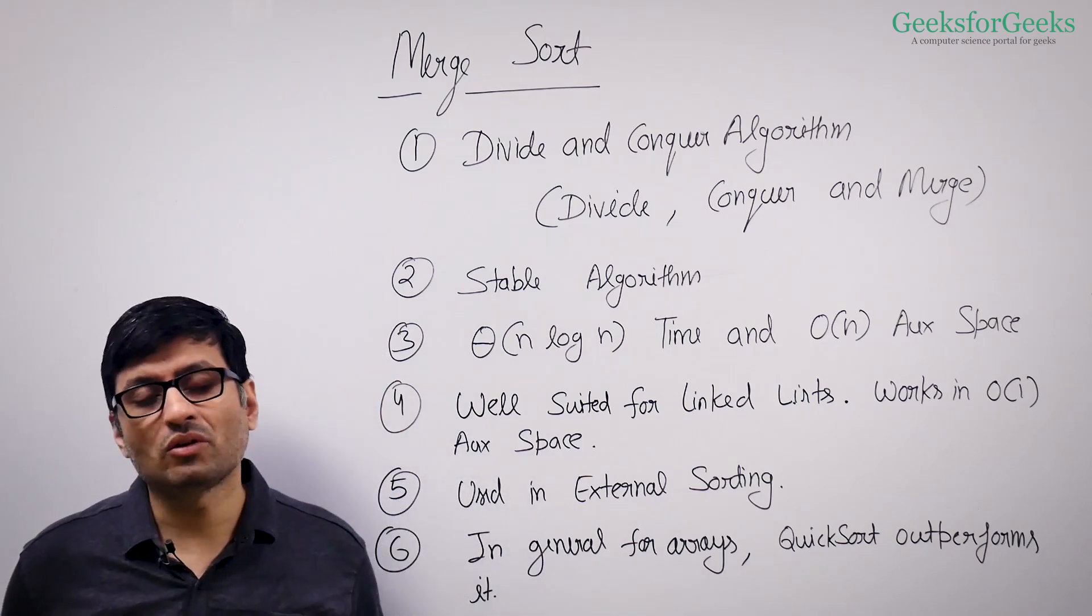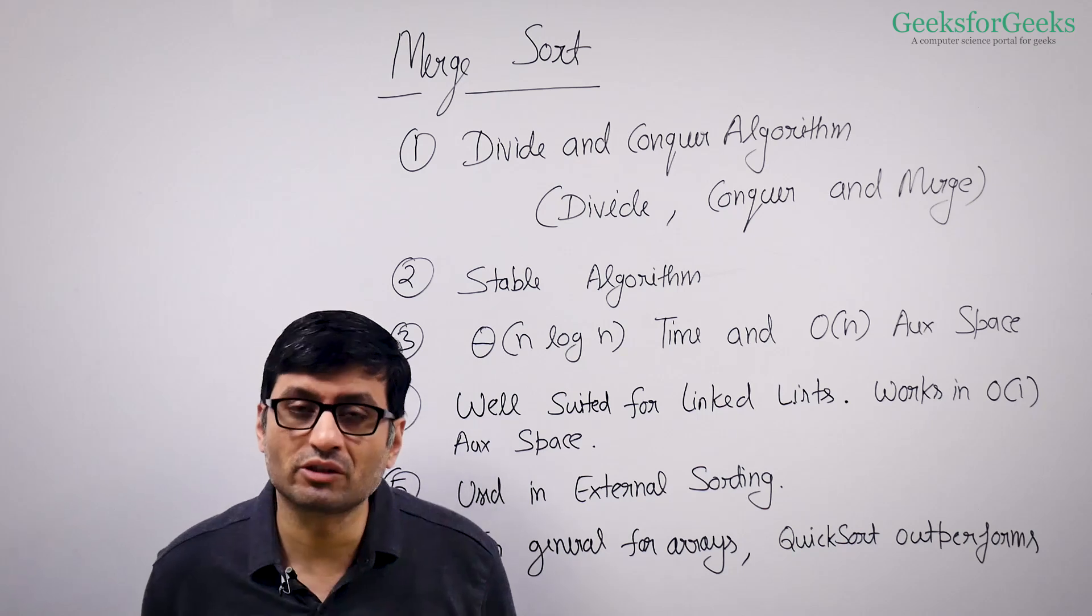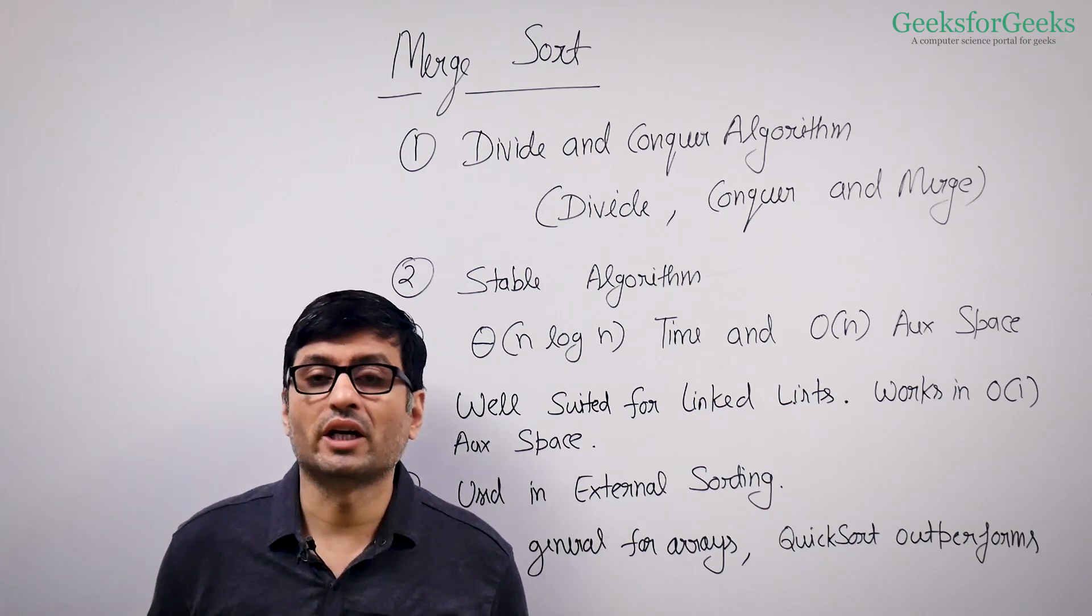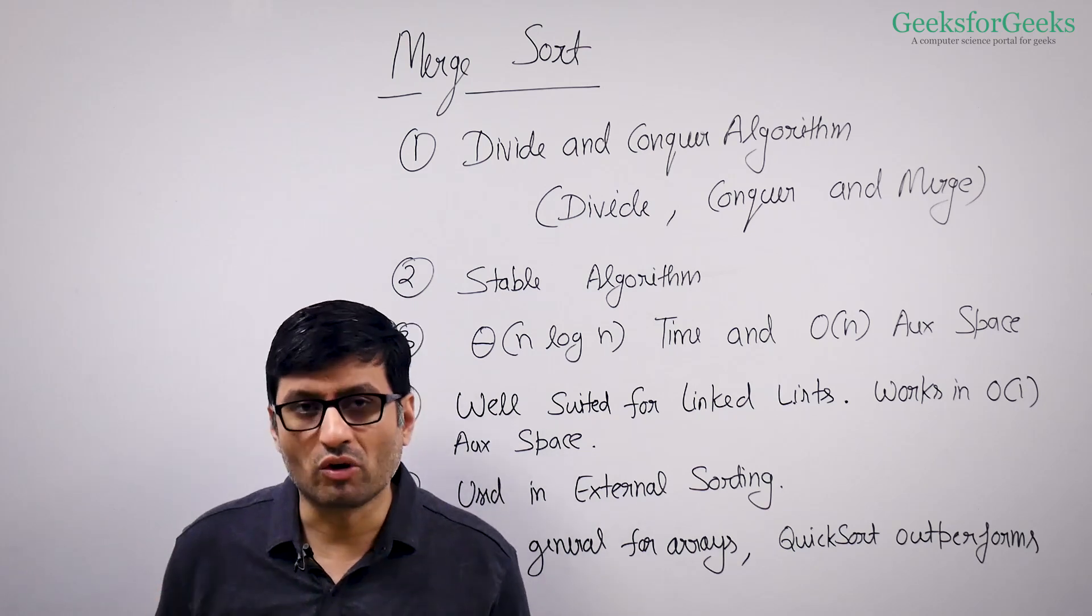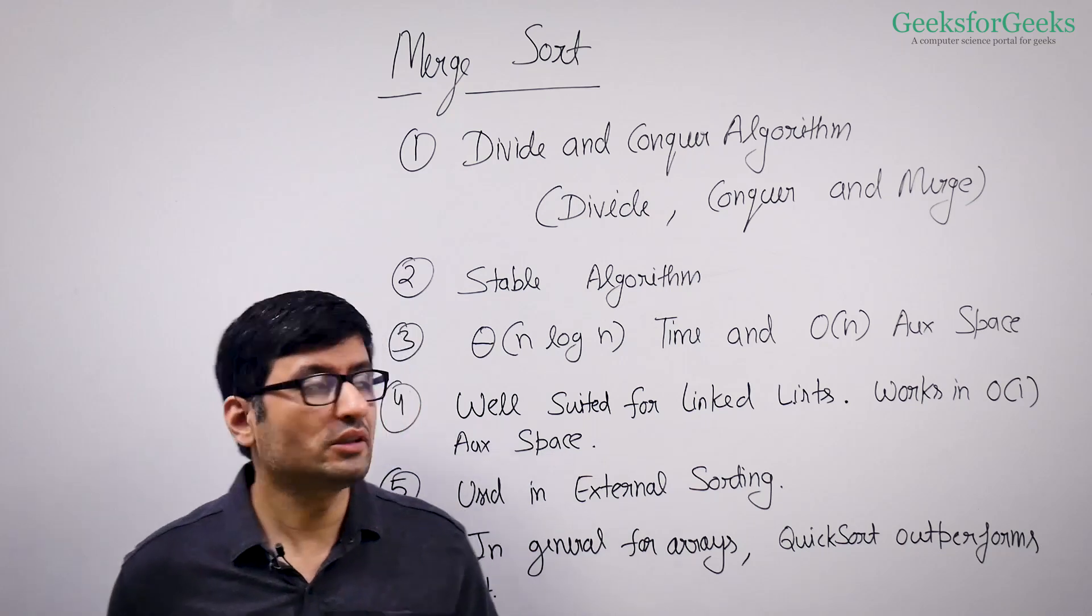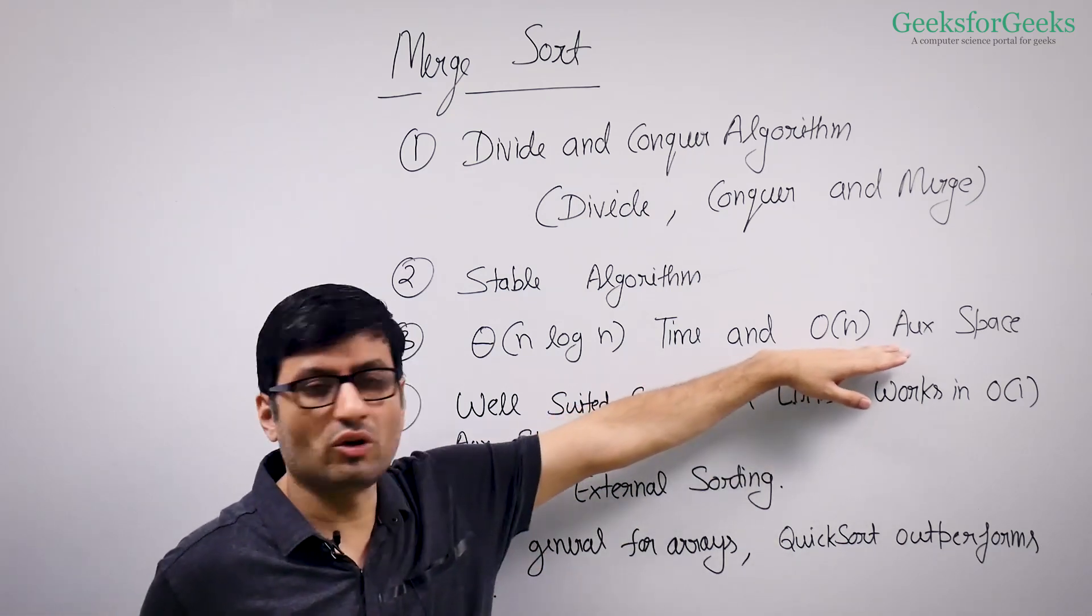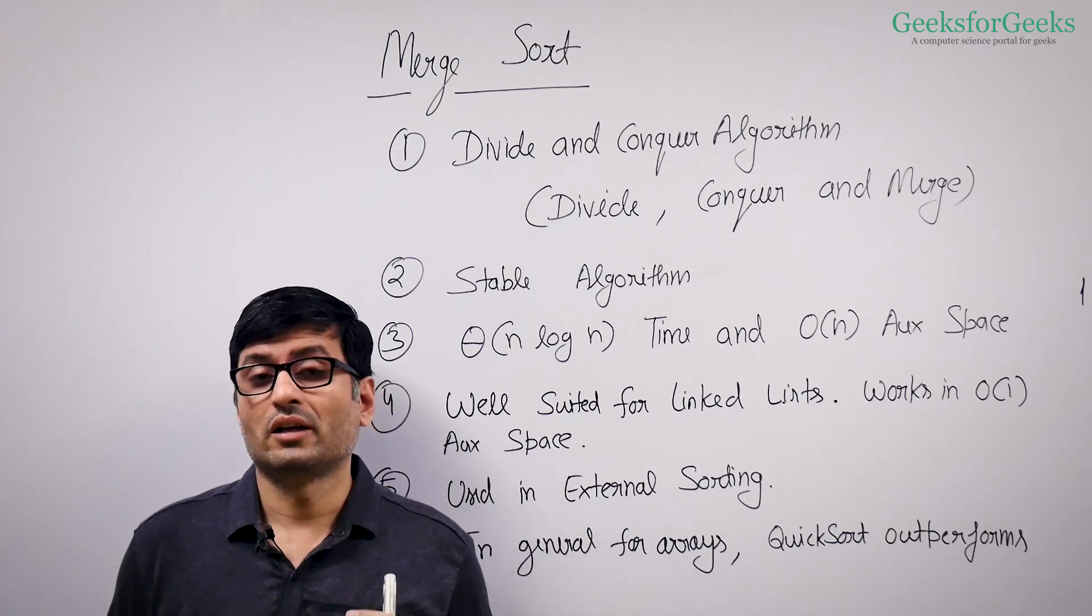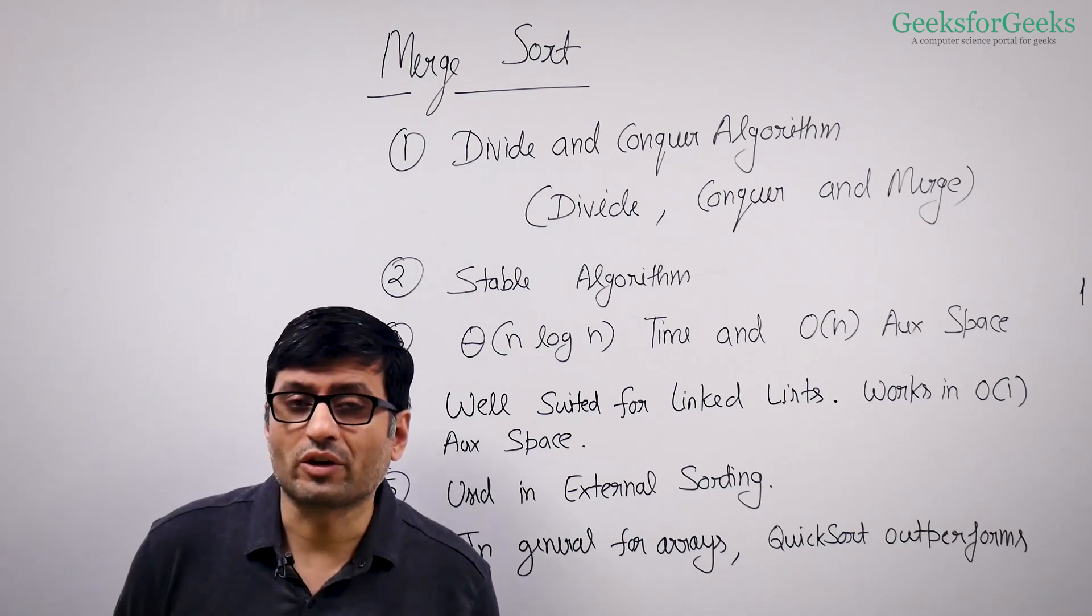However, there have been optimizations and variants of Merge Sort. There is a variant called block Merge Sort that works in log n time and in place, but in its typical form, it takes O(n) auxiliary space. The next good thing about Merge Sort is it's well suited for external sorting.